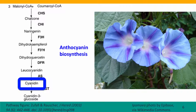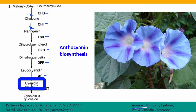Here's the first example — the morning glory, ipomea. Most morning glories have lovely blue flowers. The blue pigment is the result of a biochemical pathway that synthesizes a blue molecule called cyanidin. Each of these steps is a catalytic step carried out by a catalytic enzyme. These are the names of the enzymes, each of which is specified by a gene in the genome of ipomea, the morning glory. Defects anywhere in this pathway can prevent the synthesis of the blue pigment and cause the flowers to be white. You'll see this in an upcoming lecture.